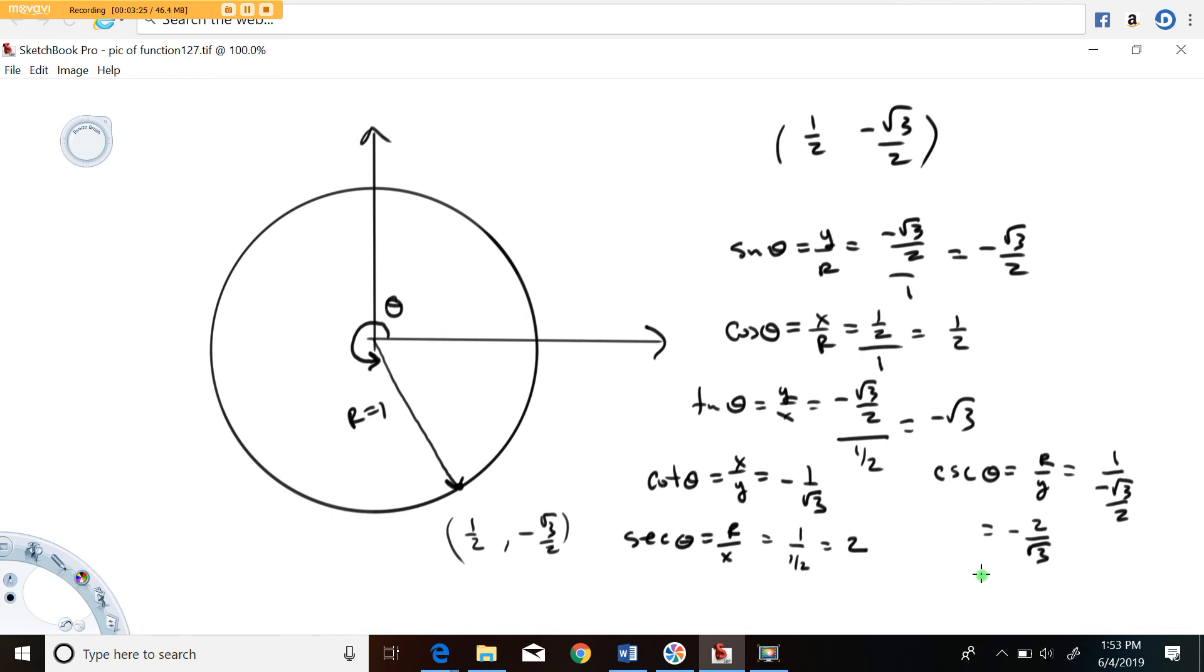So in order to find the sines, cosines, and tangents, and the cosecant, cotangent, and secants, we need to know how they're defined. And again, sine is y over r, cosine x over r, tangent y over x,